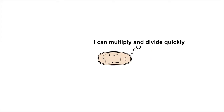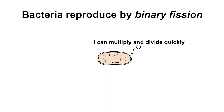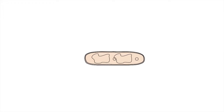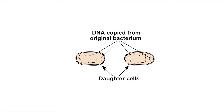On top of this, in the right conditions, bacteria have the potential to multiply very quickly. Bacteria reproduce by a process called binary fission. The bacterial cell lengthens, the DNA is replicated, and the cell pinches in two, resulting in two daughter cells, each with its own copy of the original cell's DNA.